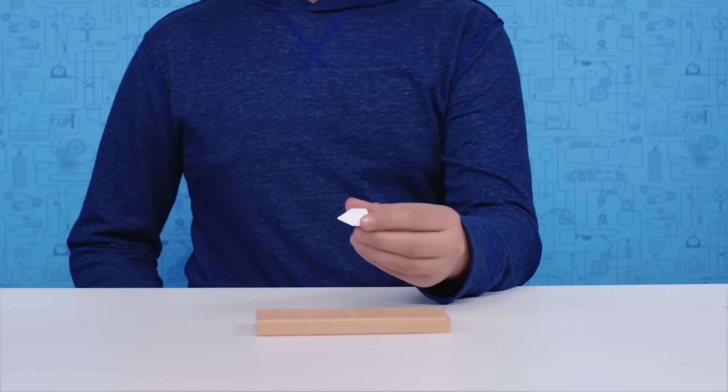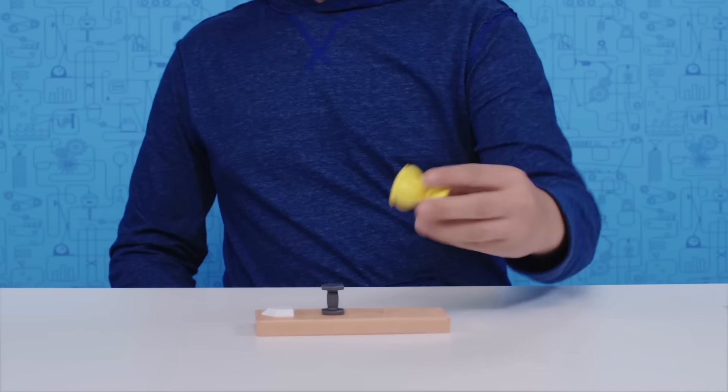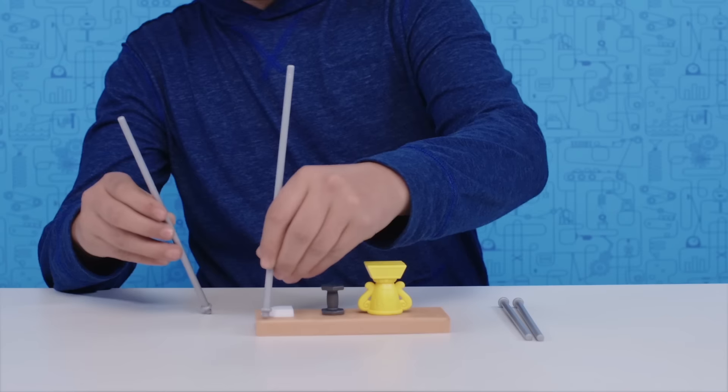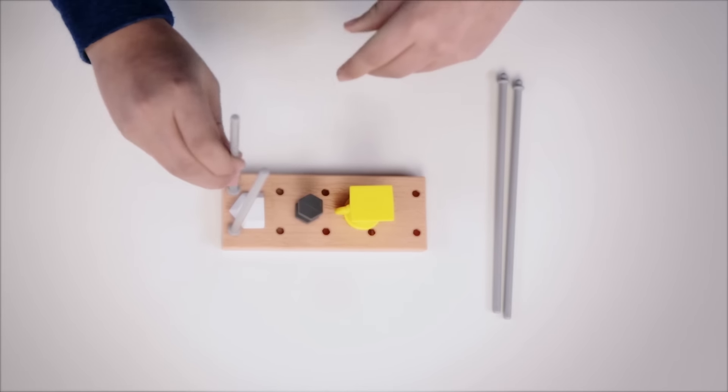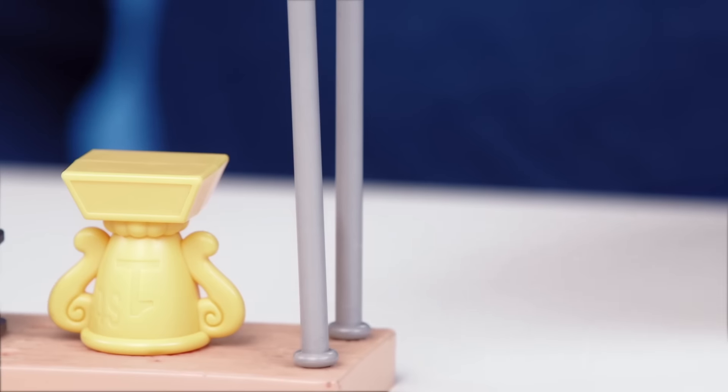First, attach the white home plate into the gym floor base as shown. Then, add the dumbbell and the trophy. Insert the two long poles into the holes near home plate. The two shorter poles fit next to the trophy on the other end.